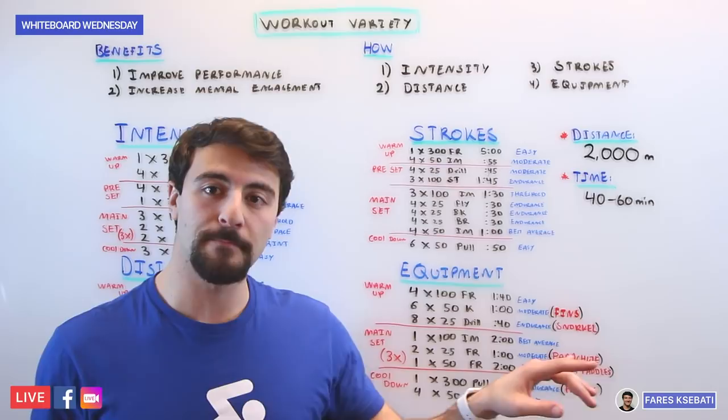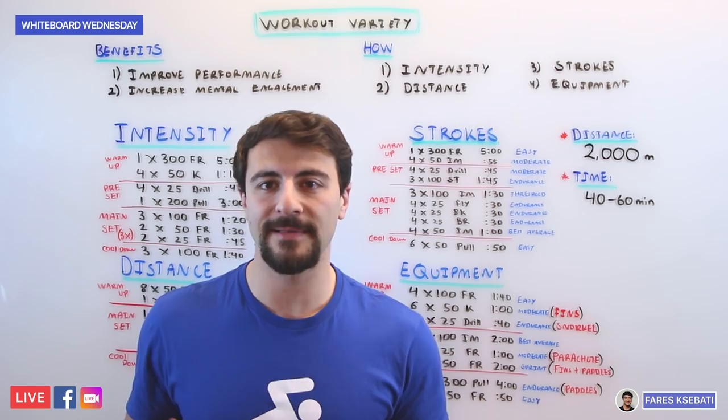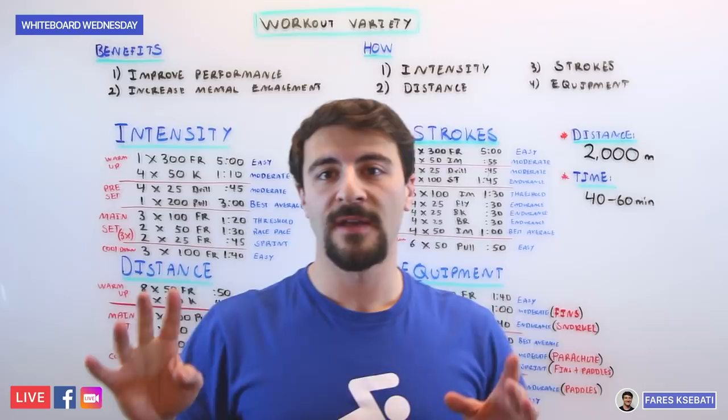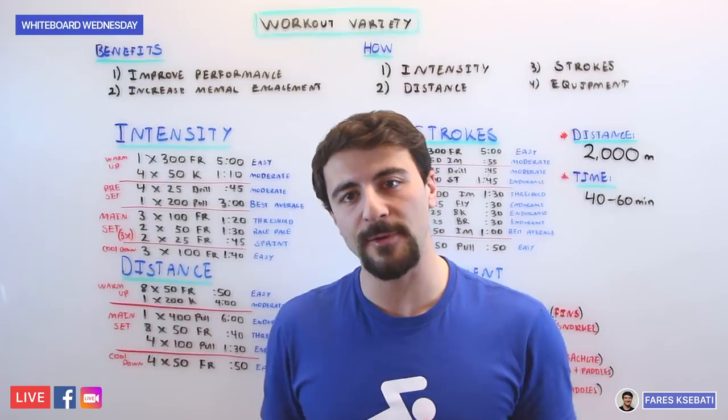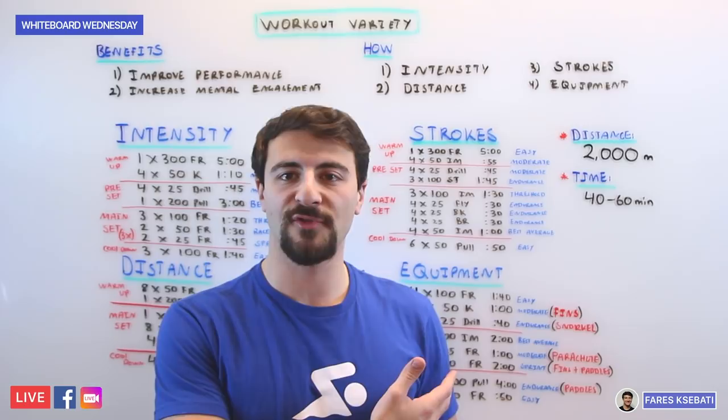So whether you look at the equipment, strokes, distance, or intensity, all four of these are valid ways to add variety to your training. And the reason why you want to add variety is because it can increase your performance. You're going to get more musculature when you train with equipment or you do different strokes, different distances, different speeds. You're actually going to increase your feel of the water by engaging different muscles that you wouldn't ordinarily engage because you're swimming with so much variety.